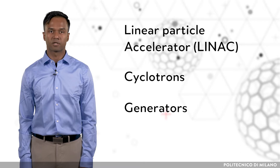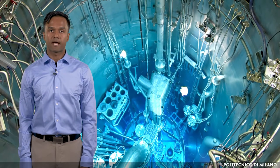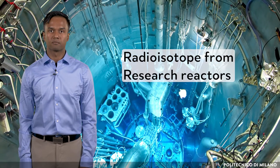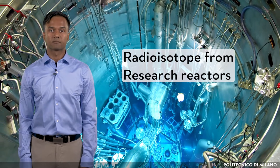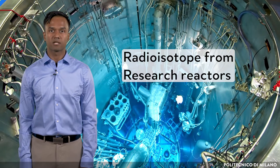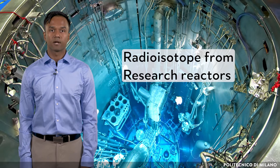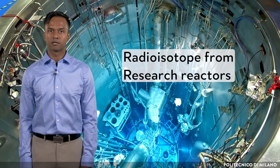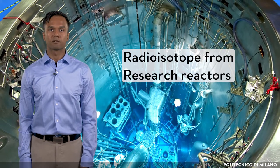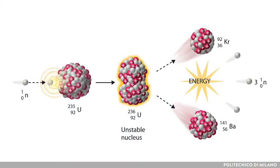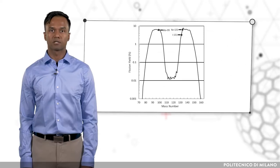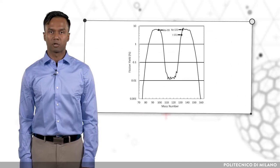Research reactors produce radioisotopes by fission of a target material, which is typically highly enriched uranium where greater than 20% is uranium-235. The uranium fission reaction produces a wide range of elements, and the product distribution can be represented using a fission yield versus mass number plot.